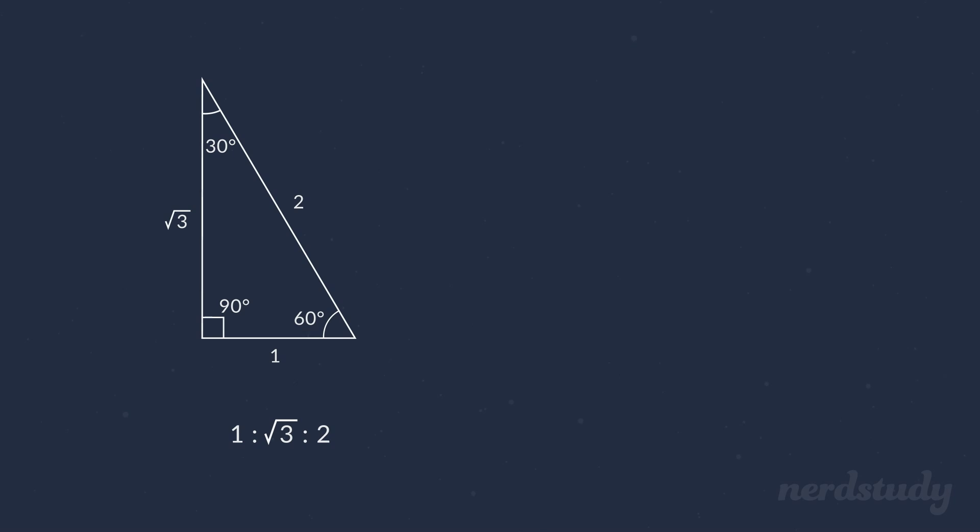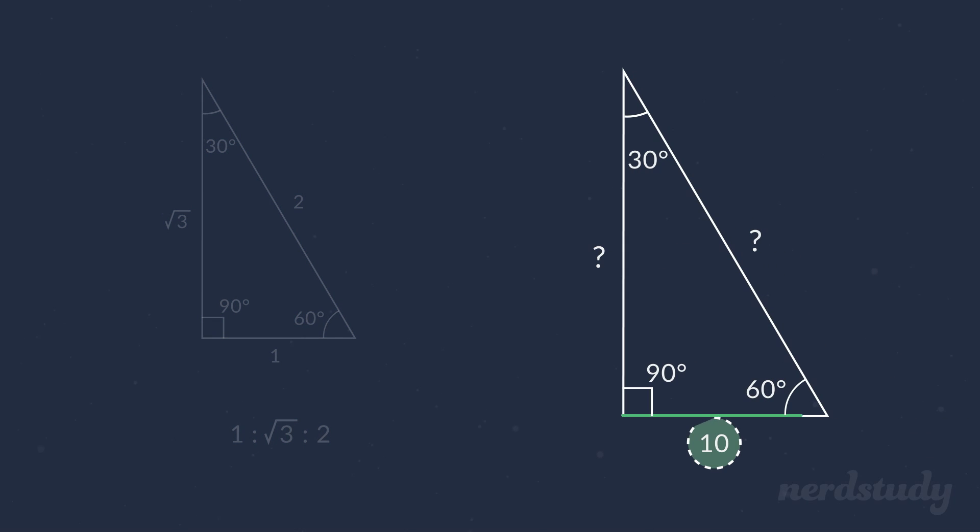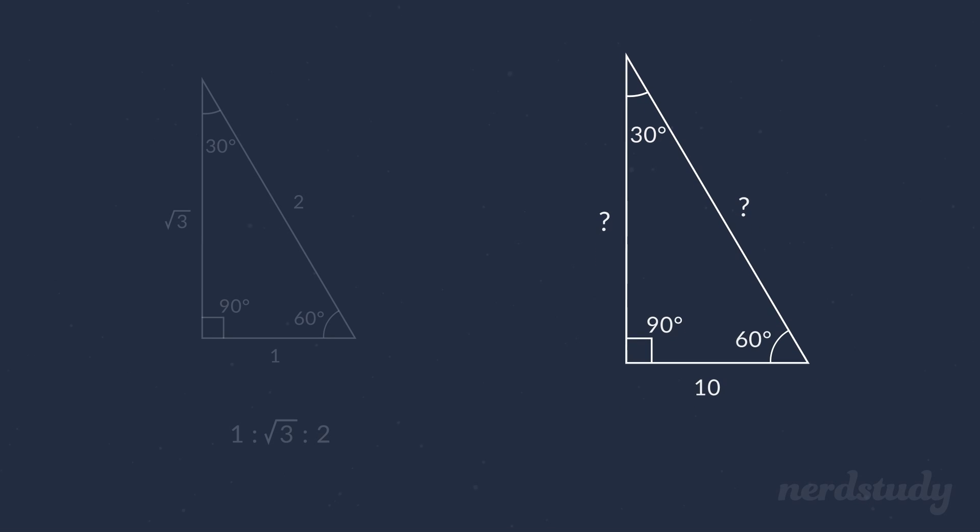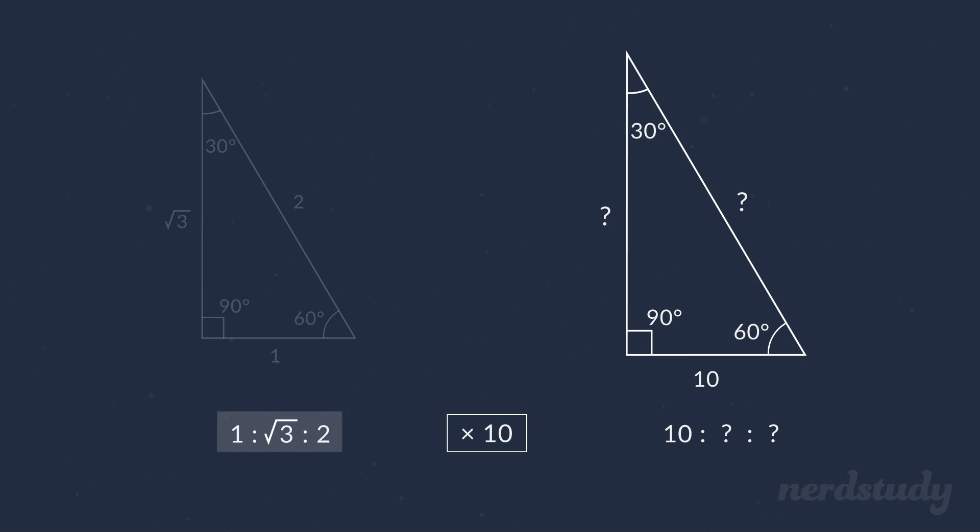For example, let's say we're given a triangle with a side length of 10 for the side that's opposite to the 30-degree angle. In this case, since that's 10 times more than the one on the 30-60-90 triangle, we should multiply all of the ratios by 10 as well in order to get the same triangle to scale. And there you have it. You'd know how to find the length of a triangle given just one of the lengths and the angles since you'd know the proportions that each side would be.